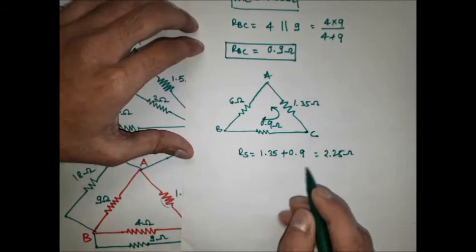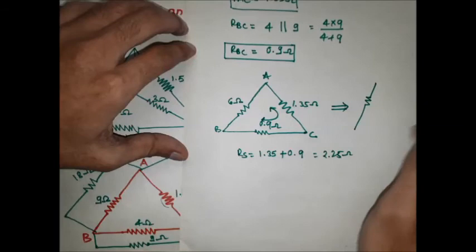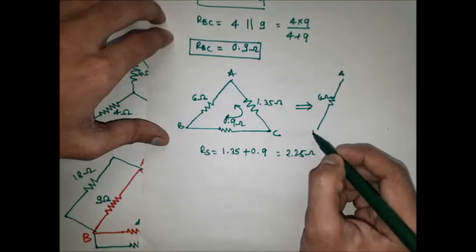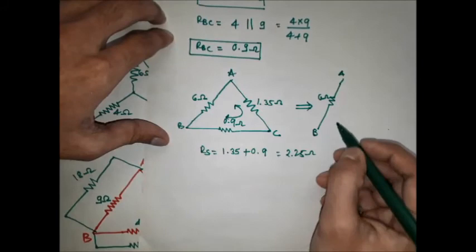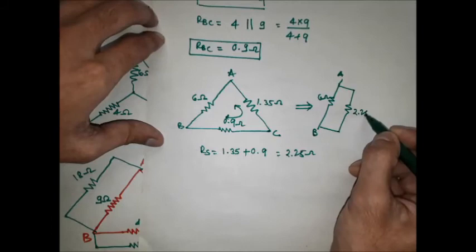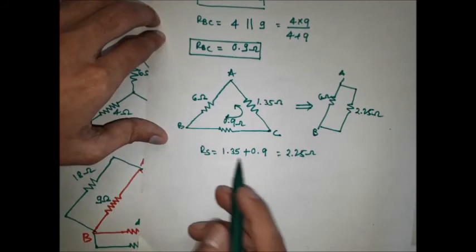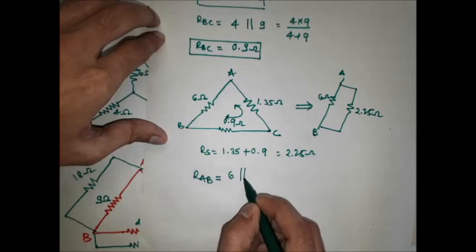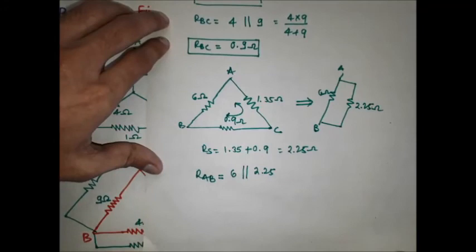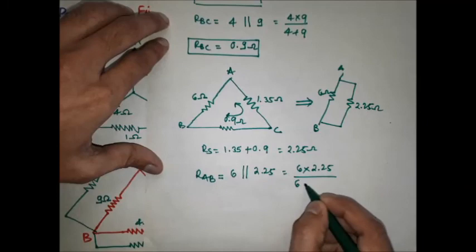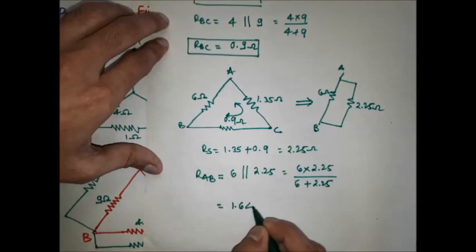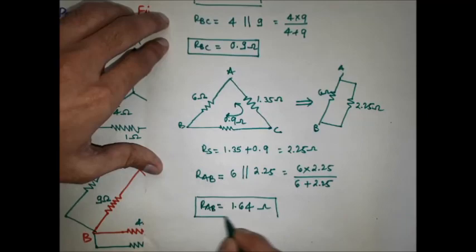The simplified network between A and B has a 6 ohm resistor in parallel with the 2.25 ohm series combination. Therefore, RAB = (6 × 2.25) / (6 + 2.25) = 1.64 ohm. This is the final equivalent resistance between terminals A and B.